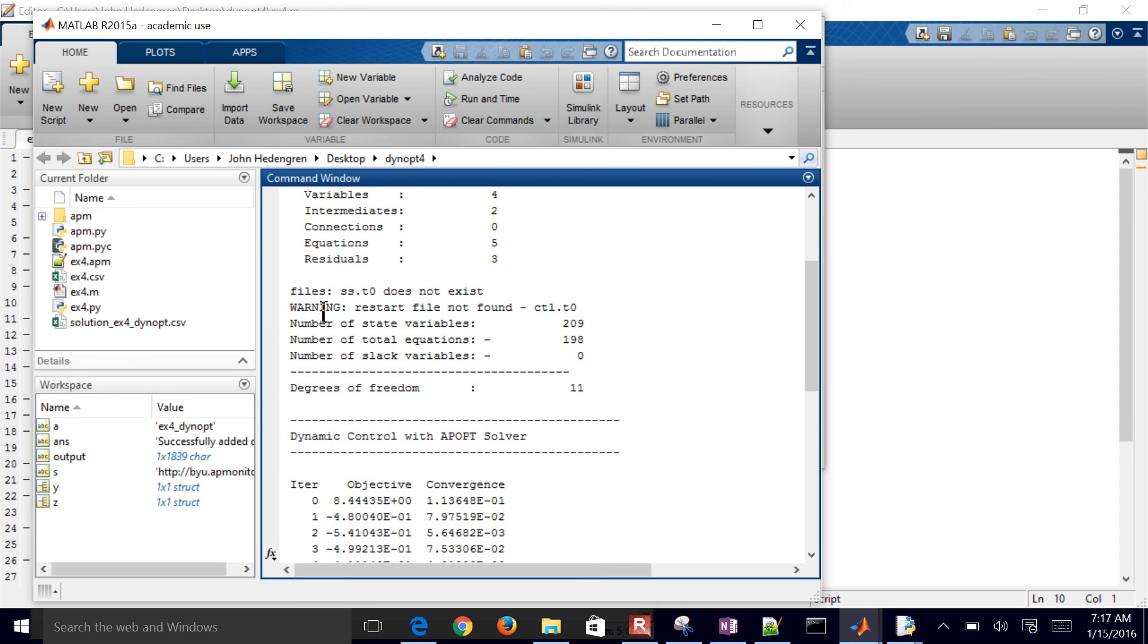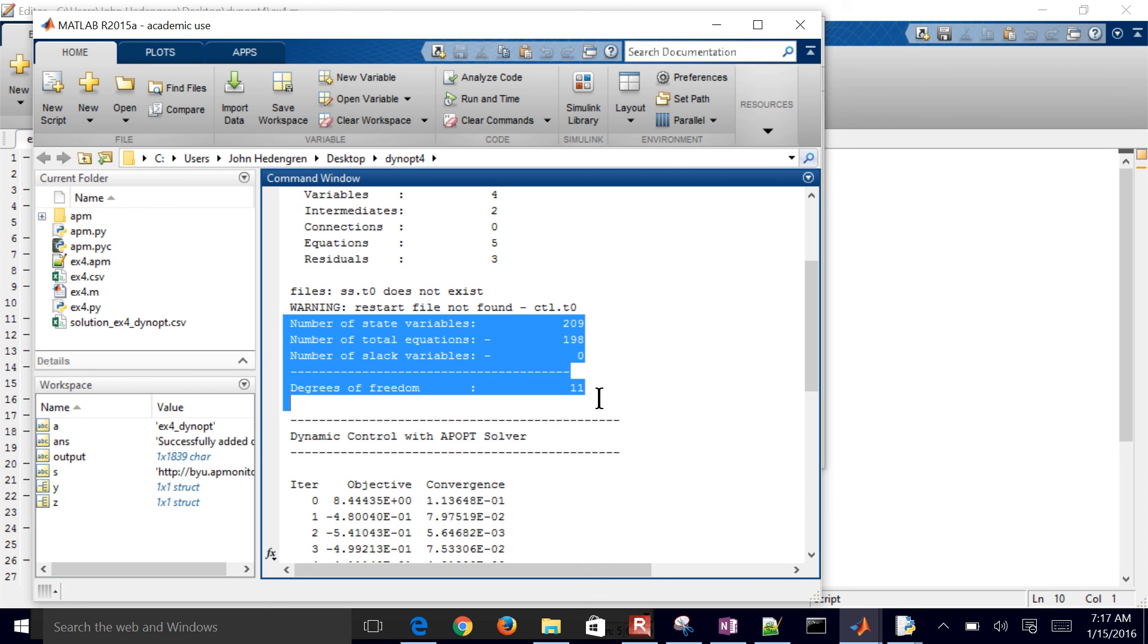This dynamic optimization problem had 209 variables, 198 equations, and 11 degrees of freedom. So it had 11 degrees of freedom because there was one value of temperature that it could select over those time intervals of 0.1 from 0 to 1. So there were 11 decisions that the optimizer had to make, but also still satisfying those other 198 equations.